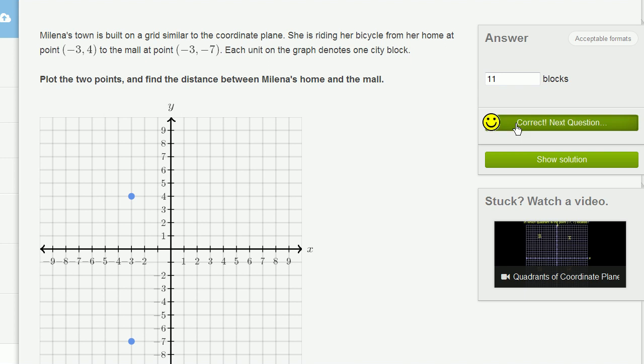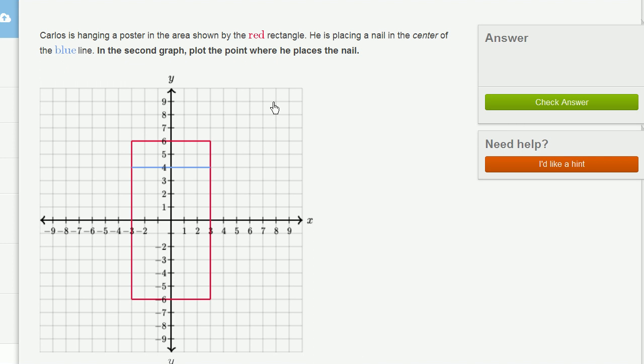Let's do a couple more. Carlos is hanging a poster in the area shown by the red rectangle. He is placing a nail in the center of the blue line. In the second graph, plot the point where he places the nail. So he wants to place the nail in the center of the blue line. So the center of the blue line, the blue line is 6 units long. The center is right over here.